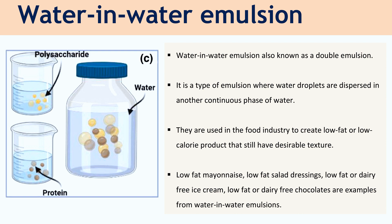The other type of emulsion is water-in-water emulsion, also known as double emulsion. It is a type of emulsion where water droplets are dispersed in another continuous phase of water. They are used in the food industry to create low-fat or low-calorie products that still have desirable texture. Low-fat mayonnaise and low-fat or dairy-free chocolates are some examples of water-in-water emulsions.